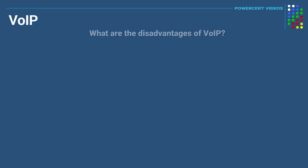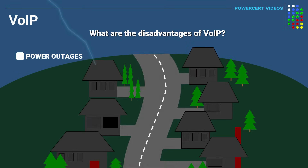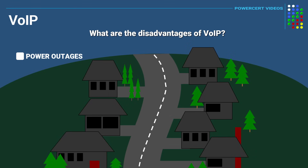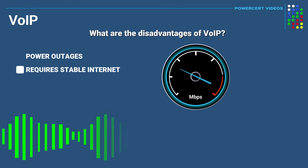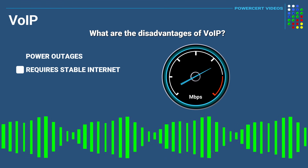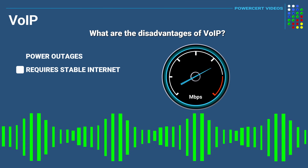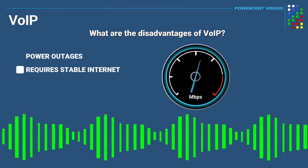There are some disadvantages of VoIP. One is power outages — if you lose power, VoIP services will not work. Another disadvantage is that VoIP relies on a reliable and stable internet connection. If the connection has stability issues, the quality of the audio will be poor.